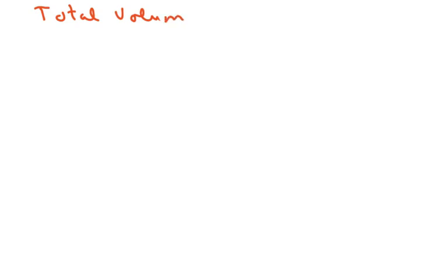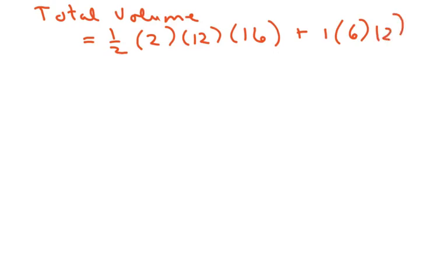Volume is going to equal 1 half, and then you just multiply your length times width times base. Then you have to add the 1 times 6 times 12, and that's the shallow end and the deep end, and that's going to give you 144 meters cubed. That's your total volume.